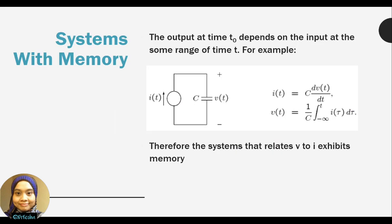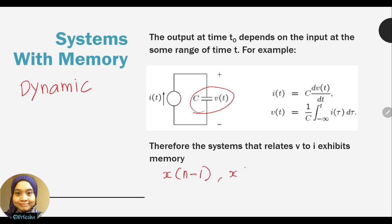A system with memory, also called a dynamic system, has storage elements. In electrical components, the storage element that can be used is a capacitor. The output of such a system is a function of past values of the input as well, so we can retrieve input values from previous time steps, such as x[n-1] or x[n-2].